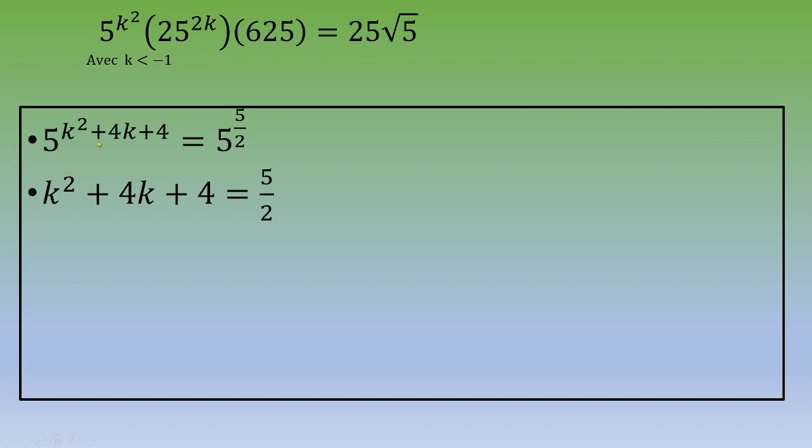You know that two numbers are equal if and only if the base is the same and the power is the same as well. So you can say that k²+4k+4 equals 5/2.